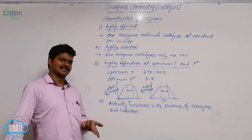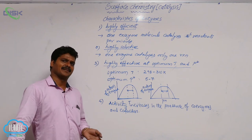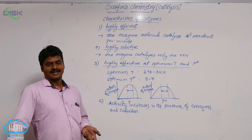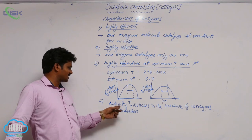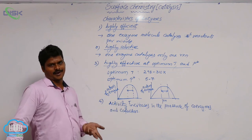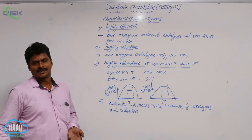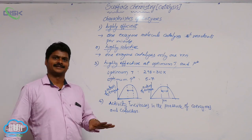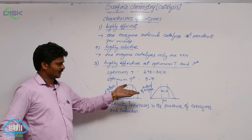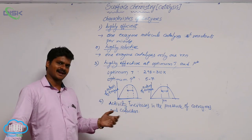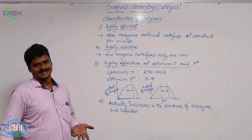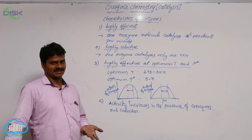For example, the enzyme amylase has its activity increased by the addition of sodium chloride, because the sodium ion acts as a cofactor. Coenzymes and cofactors act like promoters — promoters being substances that increase the activity of a catalyst.